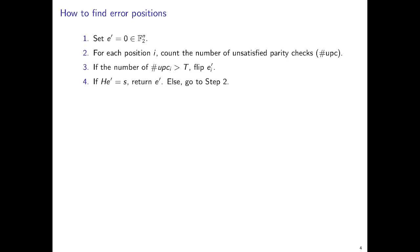So here is what you can do. You can set an error vector e' to 0. And then for each position i, you count the number of unsatisfied parity checks. If the number of unsatisfied parity checks for a position i is greater than T, then you flip e'_i. If H*e' is equal to s, then you return e', otherwise you go to step 2. This algorithm is not the same as what is specified in BIKE's specification, but essentially the decoder used by the BIKE team is a variant of this simple algorithm.